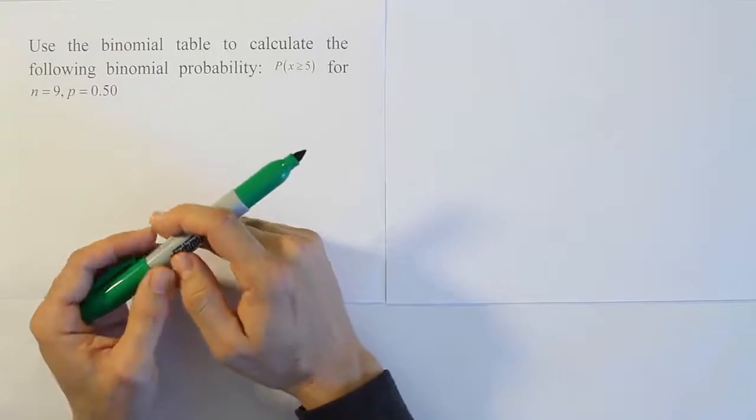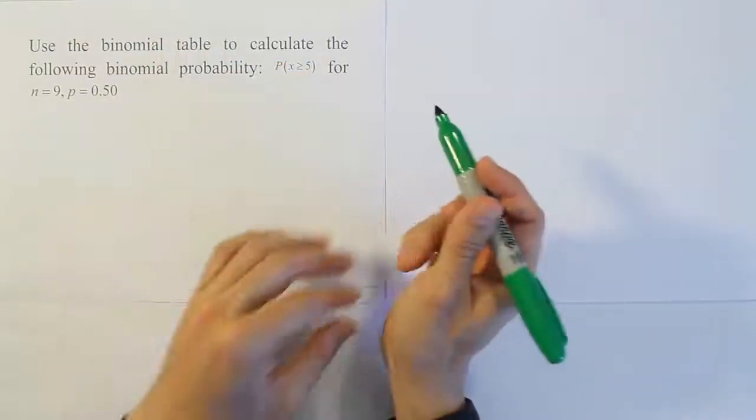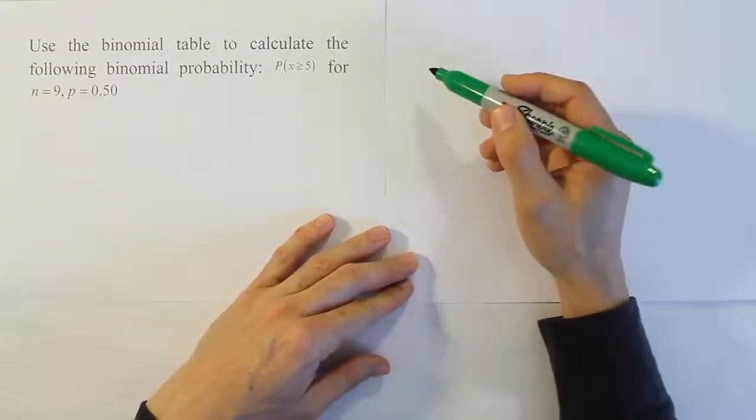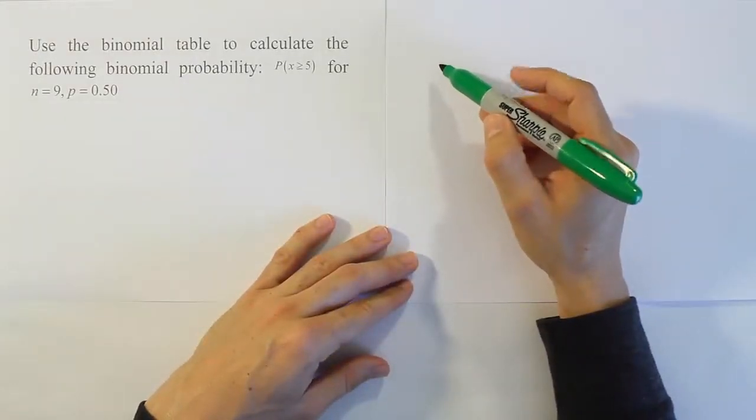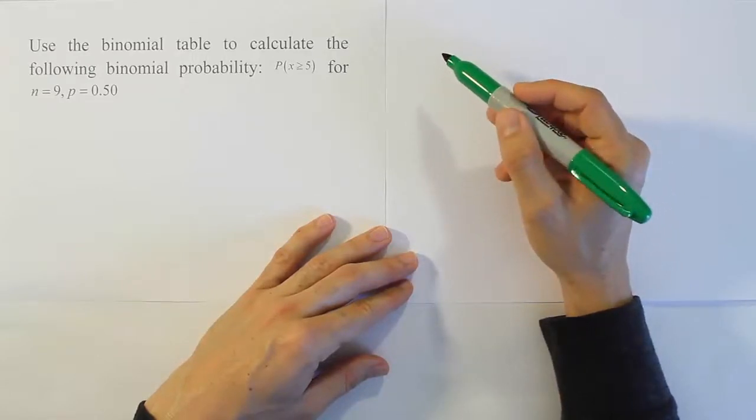Alright, so what we're going to do is use the binomial table here. What I want to show you is a pattern that exists in the table. The table of course is not an intelligent thing, it's not a program, it's not a human being.